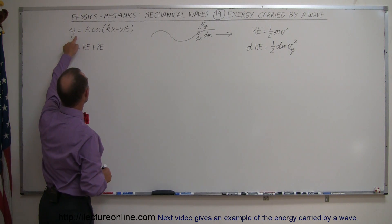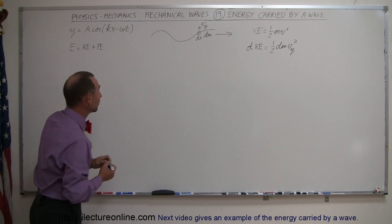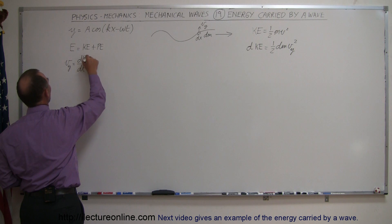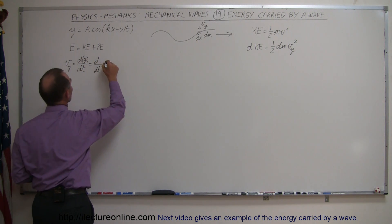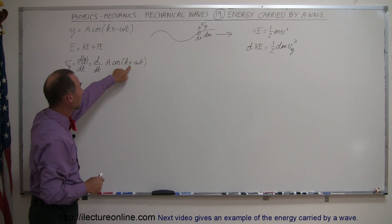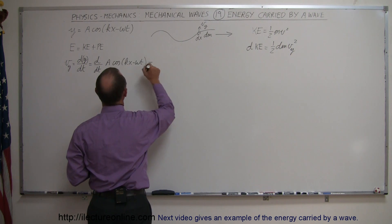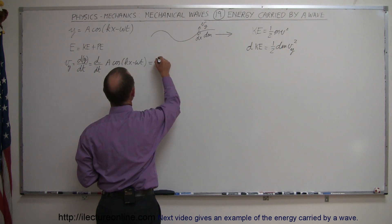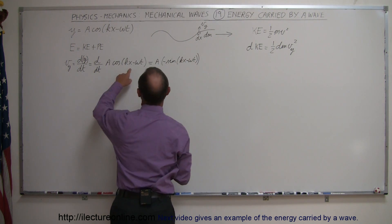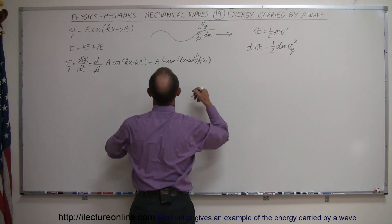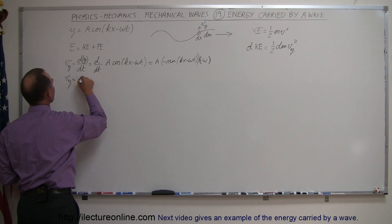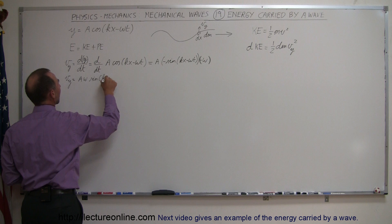Since we have the displacement as a function of x and t, we can find the velocity in the y direction by taking the derivative. The velocity in the y direction is equal to d/dt of y, which is d/dt of A·cos(kx − ωt). Since x is constant and only t varies, the derivative of cosine is negative sine, giving A·(−sin(kx − ωt))·(−ω). The negatives cancel, so vy = Aω·sin(kx − ωt).